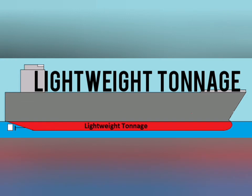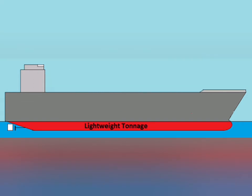Light Weight Tonnage. It is the weight of the ship when it was built in the shipyard, including all framing, machinery and decking. However, the Light Weight Tonnage does not include the weight of any consumables such as fuel, water, supplies or cargo.